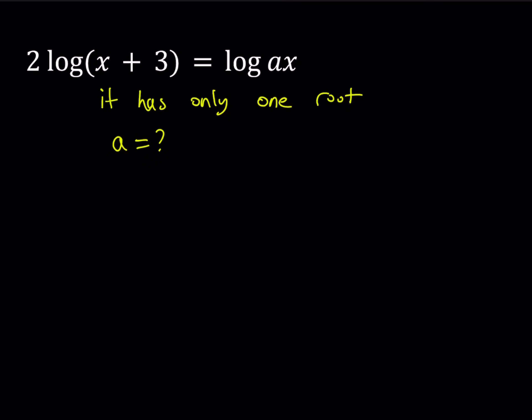This is a pretty interesting problem because a is a parameter — we don't know what it is, that's what we're going to find. Notice that x plus 3 needs to be greater than 0 in order for this log function to be defined. By the way, when I say log, you should always understand it's base 10. Otherwise, if it's base e, I'm going to be writing ln.